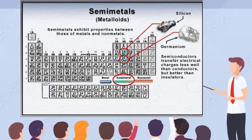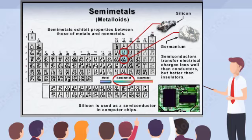Semiconductors transfer electrical charges less well than conductors, but better than insulators, which do not conduct electricity. Silicon is the primary element used in the transistors found in the computer chips, allowing you to view this program.